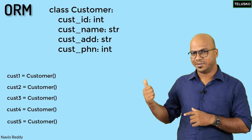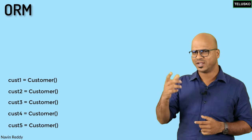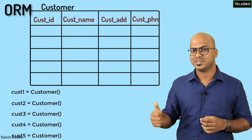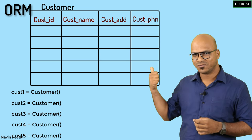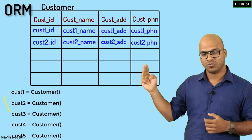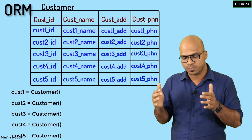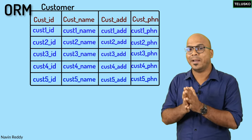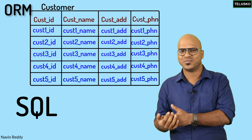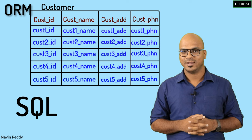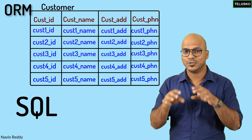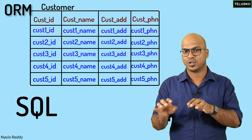If you want to store this in a database, you will have a table — we have talked about that customer table. In that customer table, one object represents one row. So the first row will be our first object's data, the second row would be the second object's data, and the third row would be the third object's data. How can you push this data from the application to the database? That's where we have SQL. So as a programmer, you have to write SQL queries.